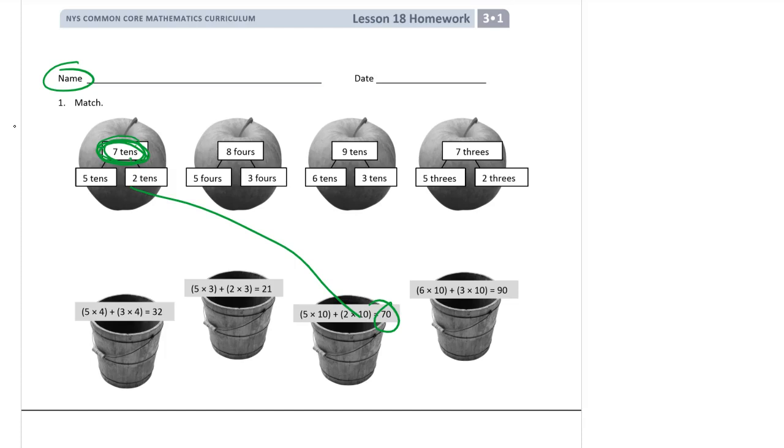What we're really looking for is, there's 5 tens and 2 tens, and here's the 5 tens and the 2 tens. Our next one is 8 fours. Maybe you don't know what 8 fours is off the top of your head, but we're looking for 5 fours, which is 5 times 4, and 3 fours, which is 3 times 4. So here's 5 fours and here's 3 fours. Those match up.